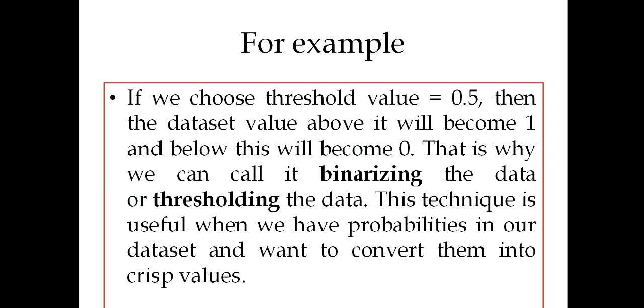For example, if we have chosen our threshold as 0.5, then all the values in the dataset above it will become one, and below this will be zero. That's why we can call it binarizing the data or thresholding the data also, as we are particularly depending on the threshold value.